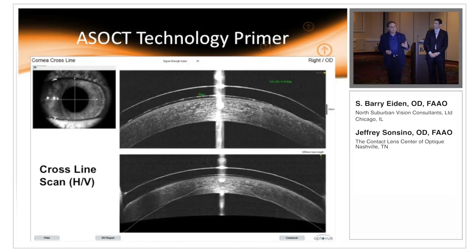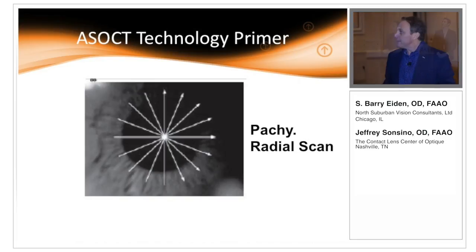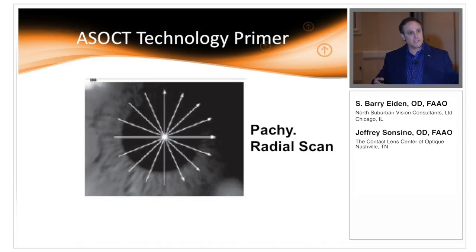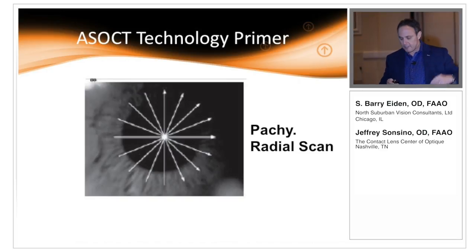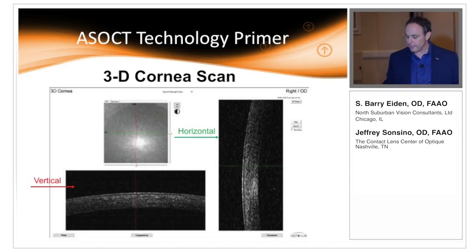A radial scan is something I've been experimenting with based on suggestions from others who use this system. As you can see here, you get all these radial cuts, and when we get the actual image we can rotate that cut along the cornea, going around the clock 360 degrees.